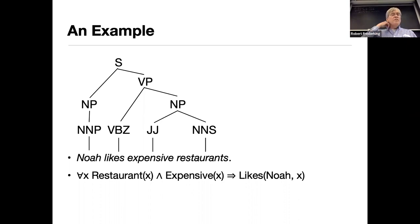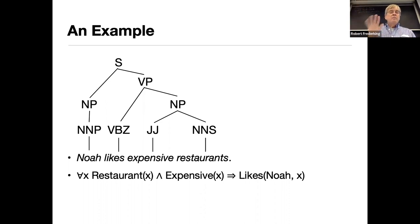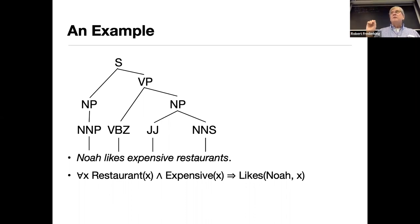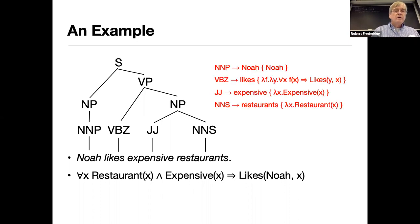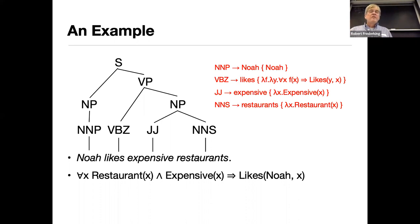Here's an example where you have the sentence 'Noah likes expensive restaurants.' The correct parse is shown, and you want a mechanism that takes the parse and the meanings of words to produce the right logical form at the bottom. When people engineer these systems, they're deliberately figuring out how to make it give you the right logical form — they carefully engineer the lambda expression to ensure that meanings combine in the way you expect.